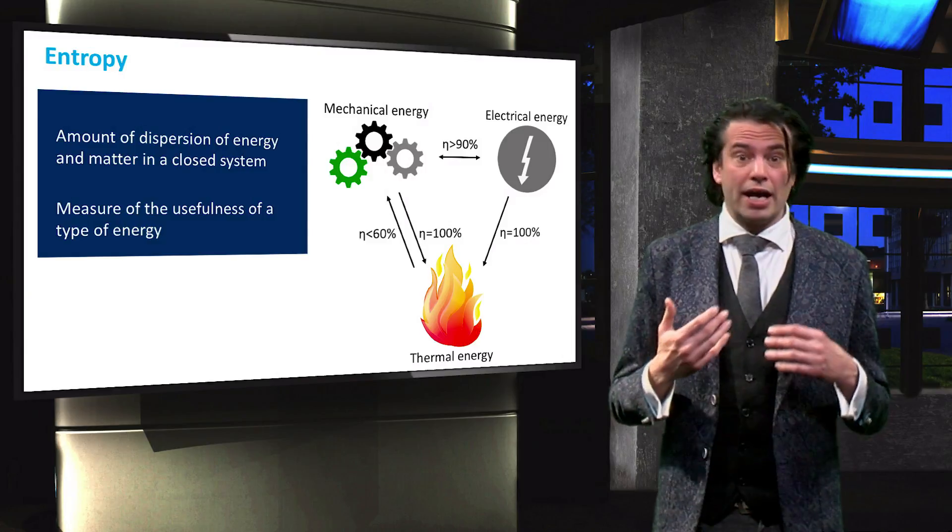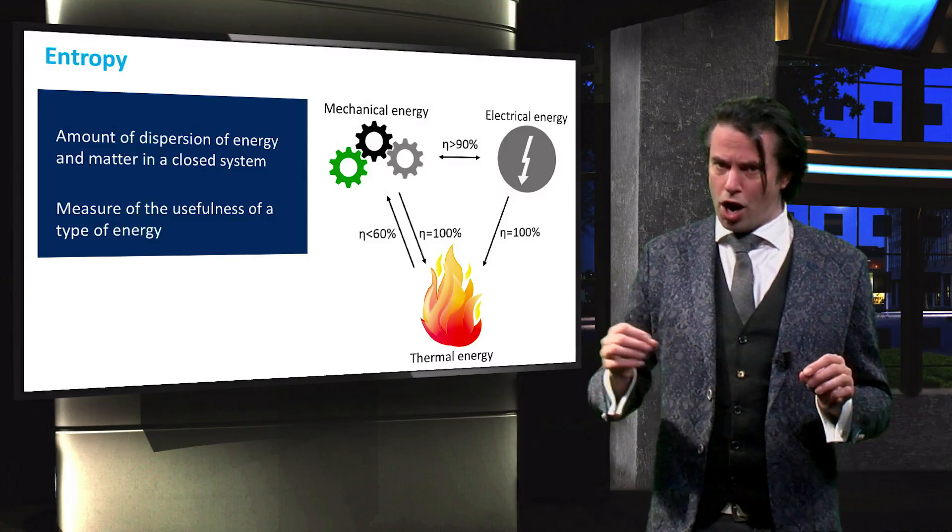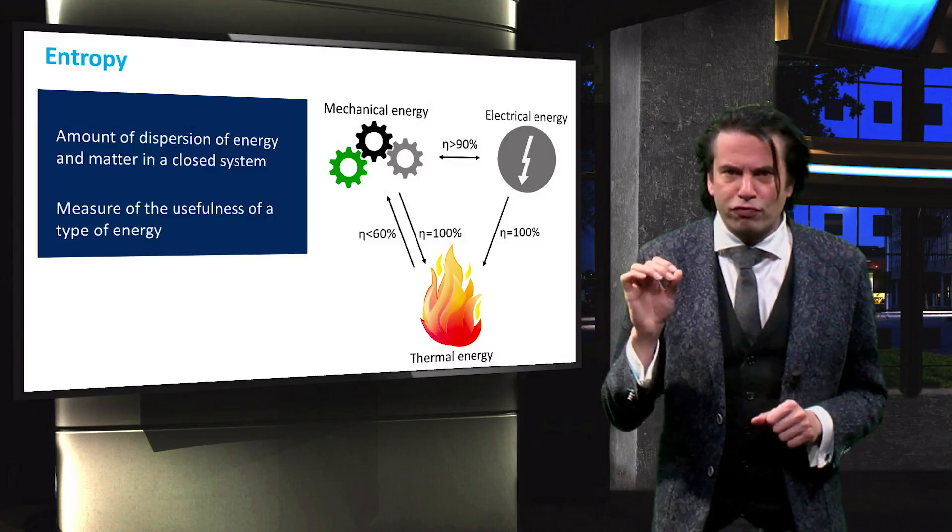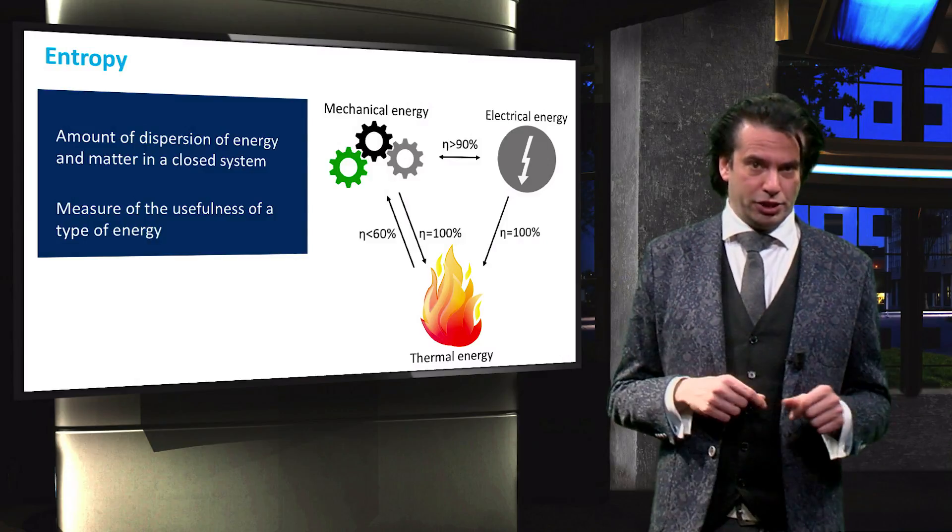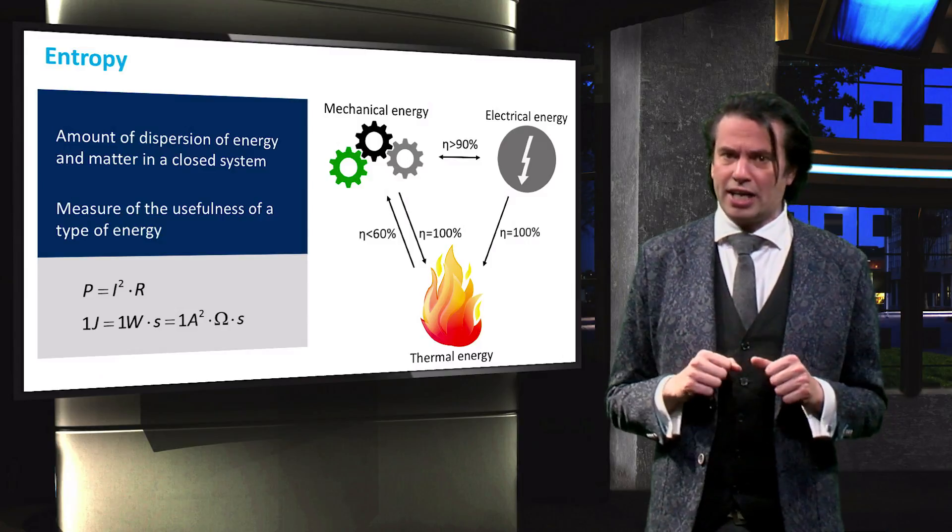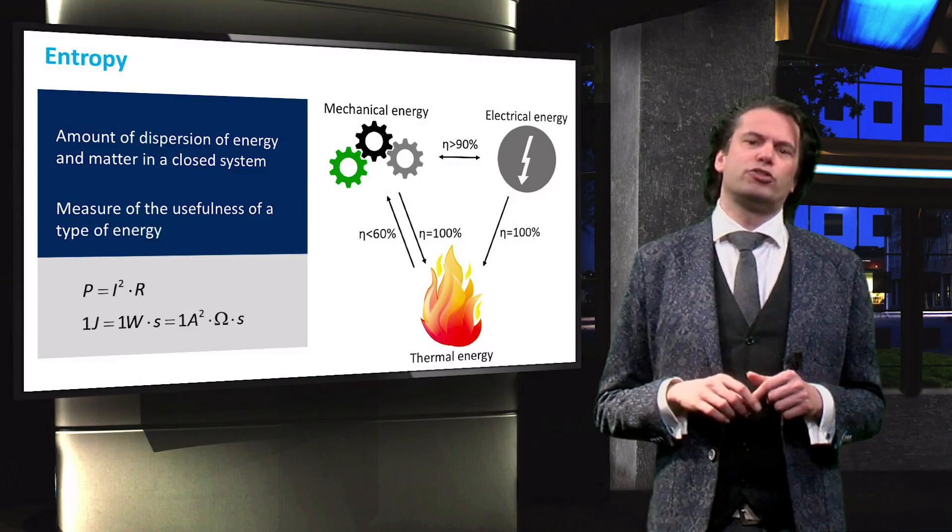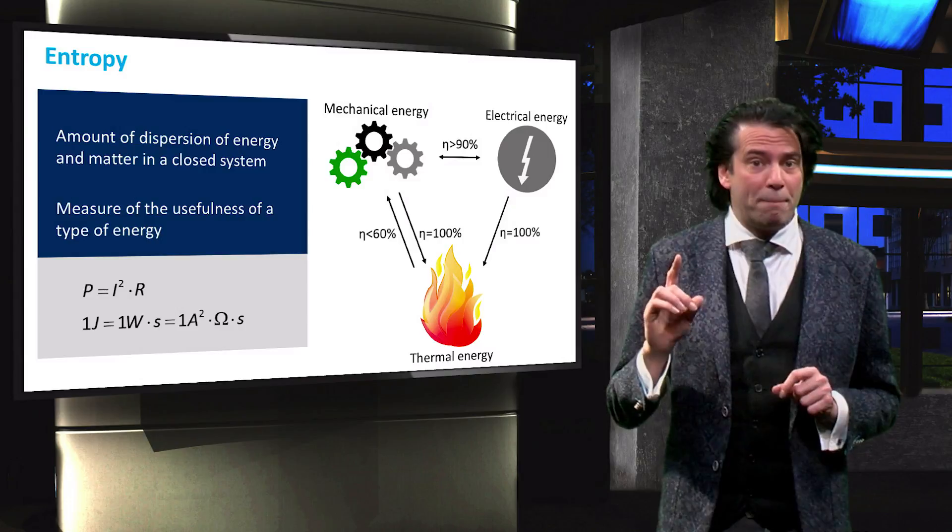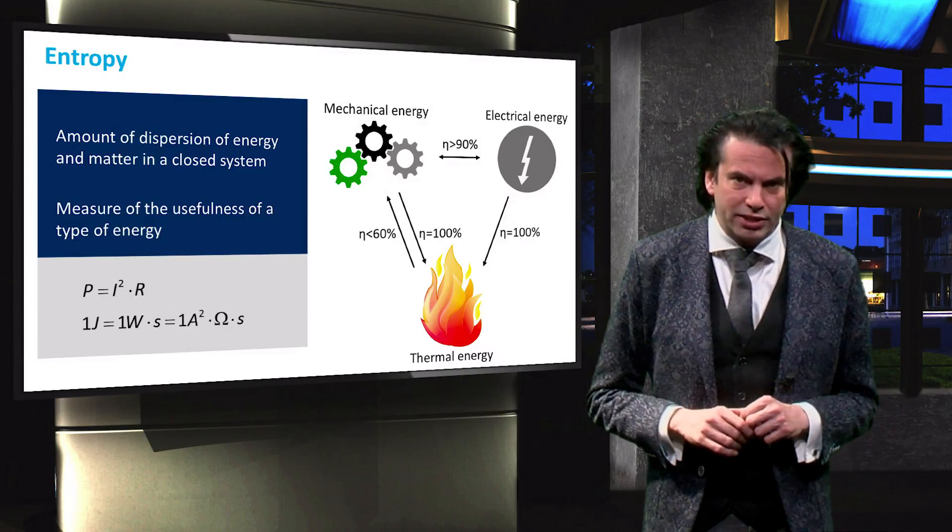When an electric current, which is a flow of charge carriers, moves through an object, its usefulness will decrease. During this flow, some power is dissipated as thermal energy. The amount of dissipated heat is equal to the current squared times the resistance of the material. One joule of thermal energy is therefore dissipated when an electric current of 1 ampere passes through a resistance of 1 ohm for 1 second.